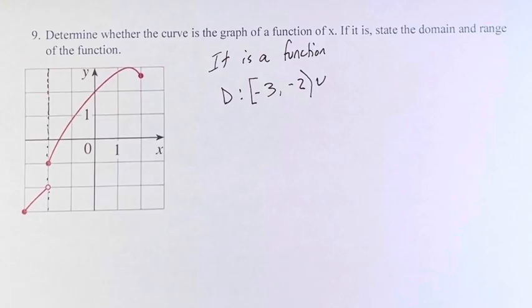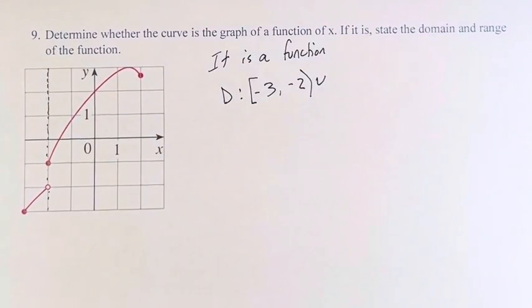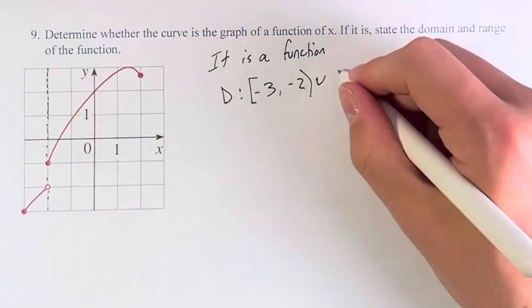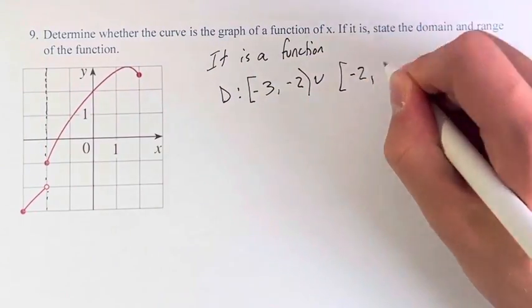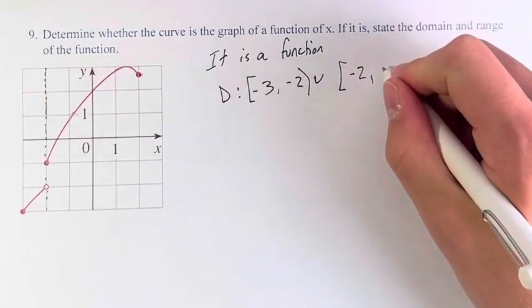However, this is including this stretch of the function right here. This starts at negative 2, inclusive because of the closed dot, and we go all the way over here, and we end here at x is equal to 2.